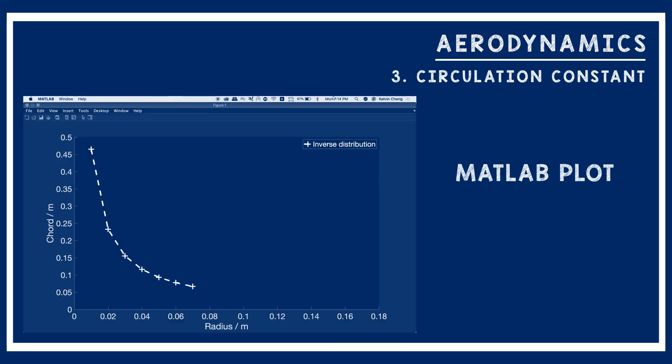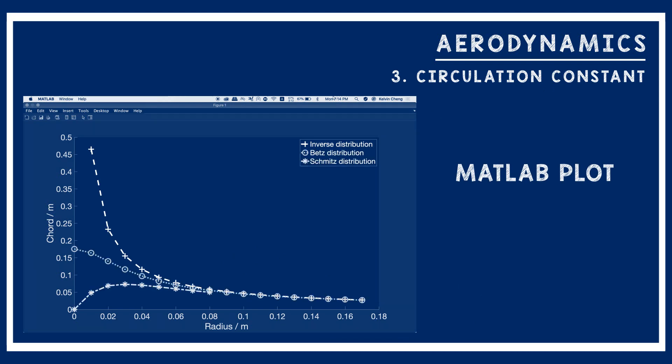Third, we want to keep the circulation constant, as this maximizes blade efficiency. To do so, the chord needs to be inversely proportional to the radius. However, this would give unrealistically large chord values at the root, exceeding the weight limit. We consulted literature and found the Schmitt chord distribution, which gave us more favorable values.